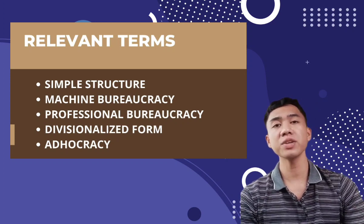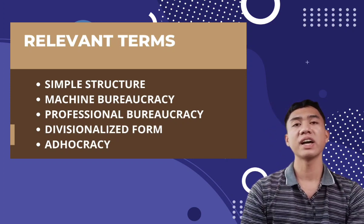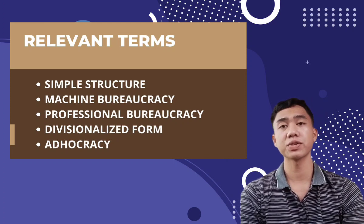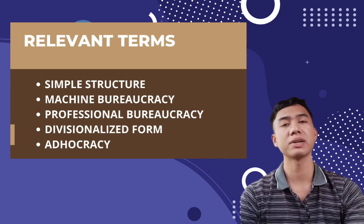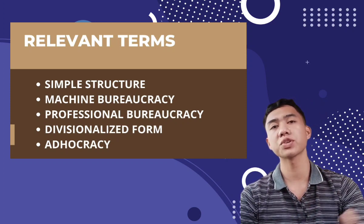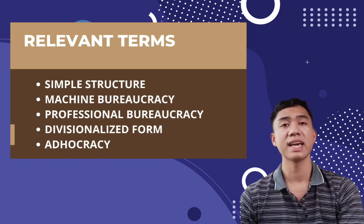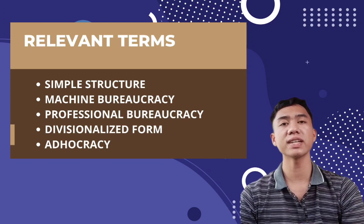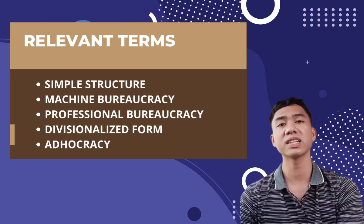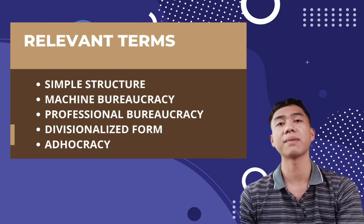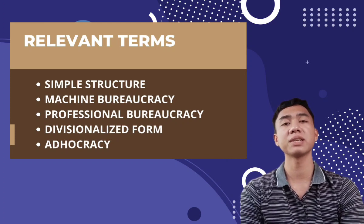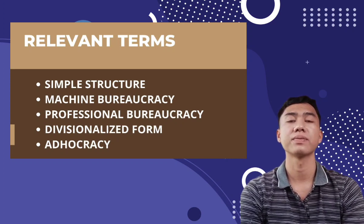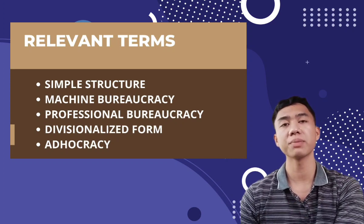The environment for a machine bureaucracy is typically stable and the goal is to achieve internal efficiency. Public schools possess many characteristics of machine bureaucracy, but most schools are not machine bureaucracies in the pure sense. However, large urban school districts — New York, Los Angeles, and Chicago — are closer to machine bureaucracies than other medium-sized or small school districts.